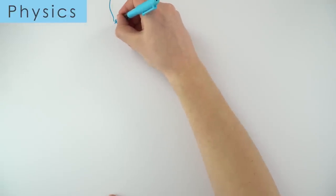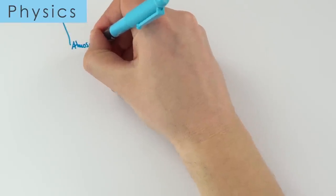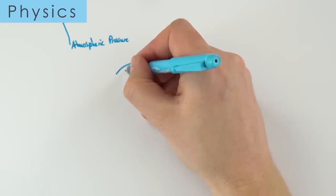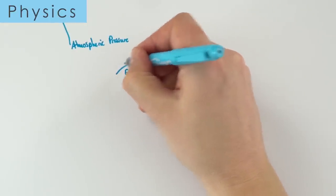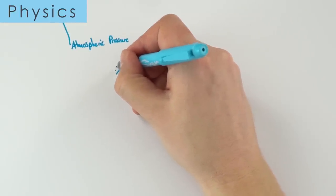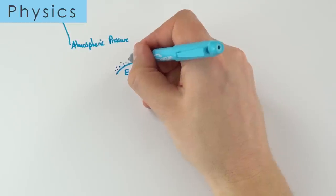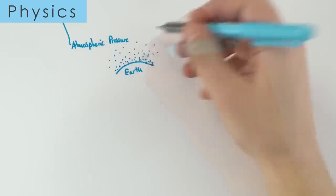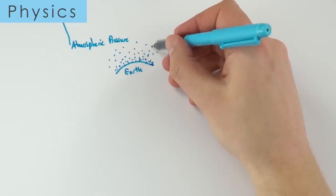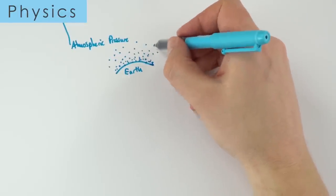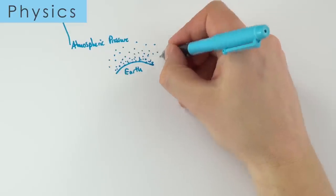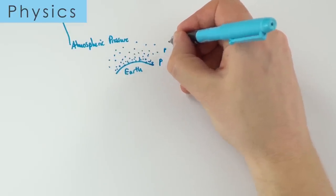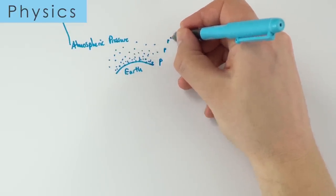Finally on pressure: atmospheric pressure comes from the thin layer of gas above the Earth's surface. As you go higher, the density of this gas decreases. Because pressure is caused by the impact of particles on a surface, fewer particles mean less pressure — so as you go higher and higher, pressure gets smaller and smaller.